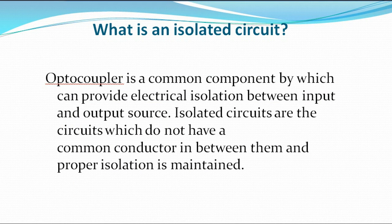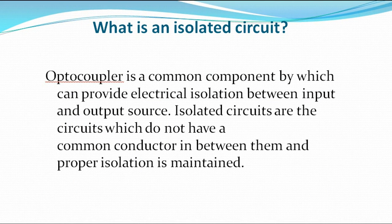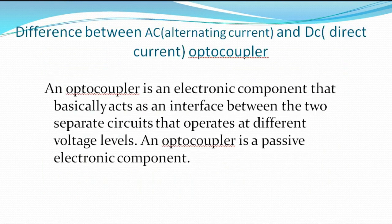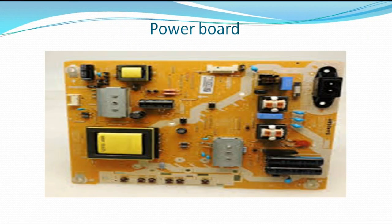Isolated circuits are circuits which do not have a common conductor in between them, and proper isolation is maintained. That is what I explained right now. Here is where the proper isolation is maintained in the same circuit. That is why in this circuit we have the primary side. We also have the secondary side, being the hot as well as the cold. An optocoupler is an electronic component that basically acts as an interface between the two separated circuits that operate at different voltage levels.